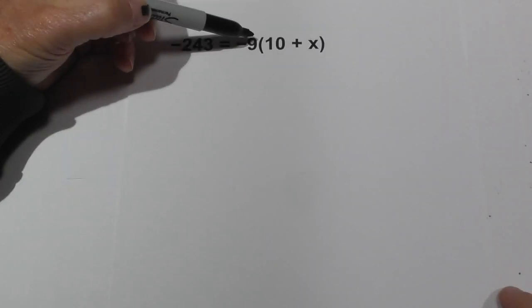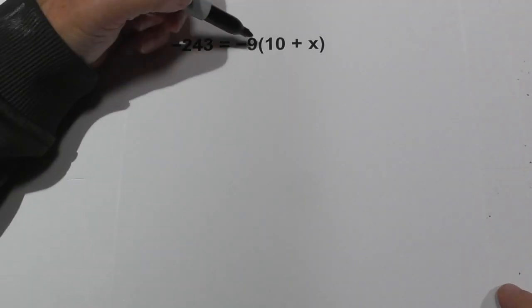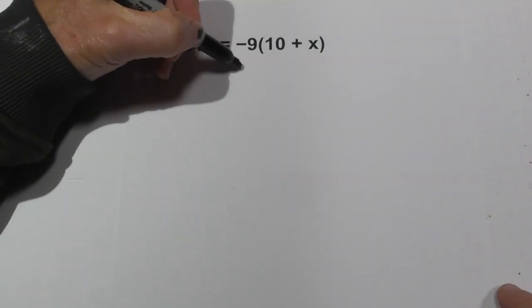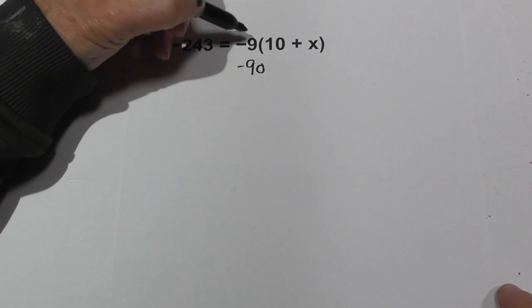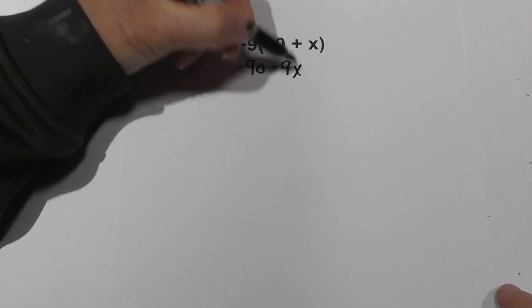Remember with PEMDAS we need to start with parenthesis. So let's distribute the 9. 9 times 10 is negative 90.